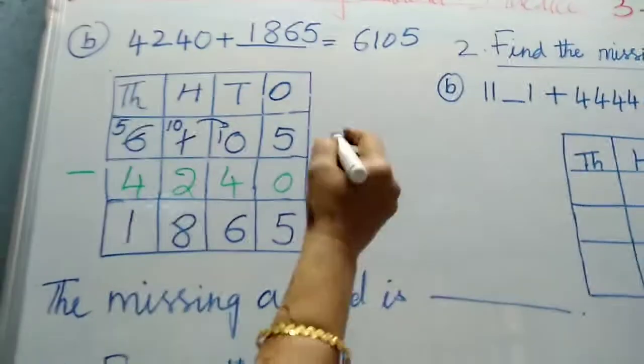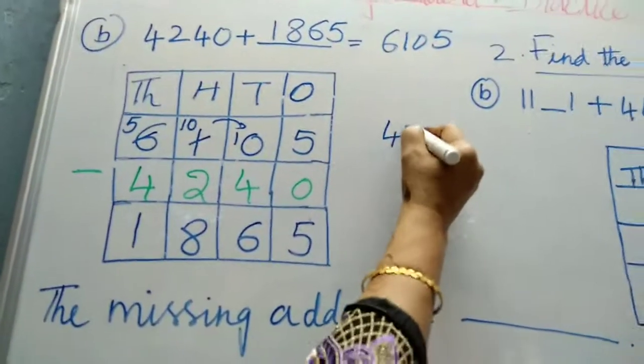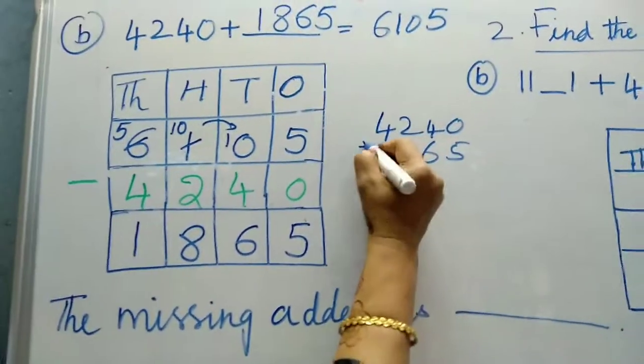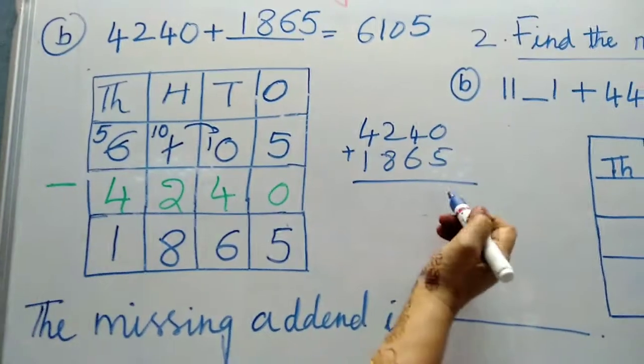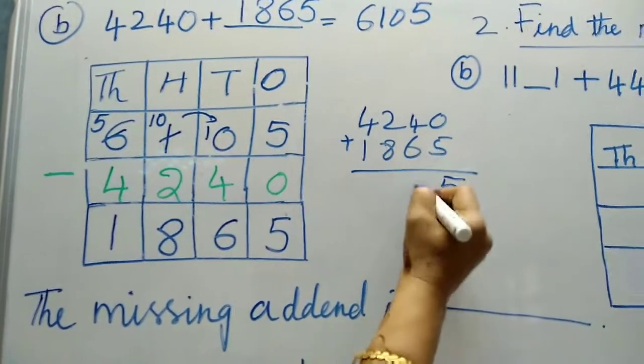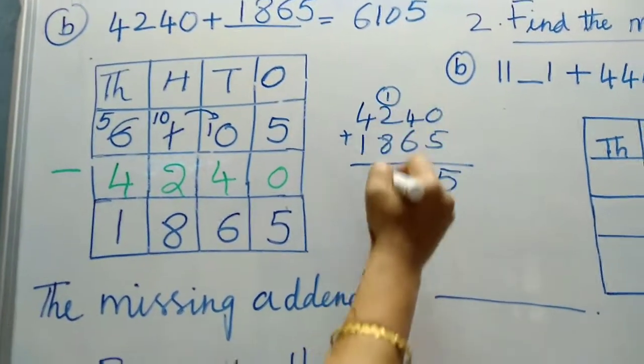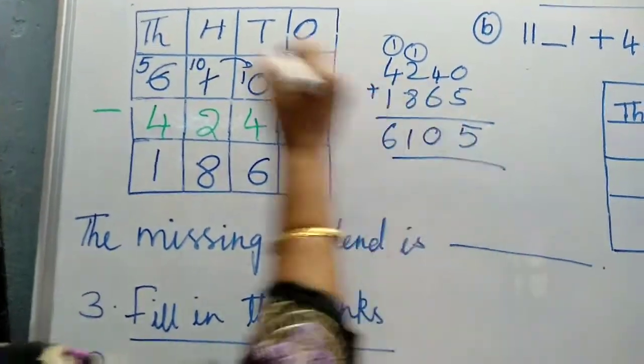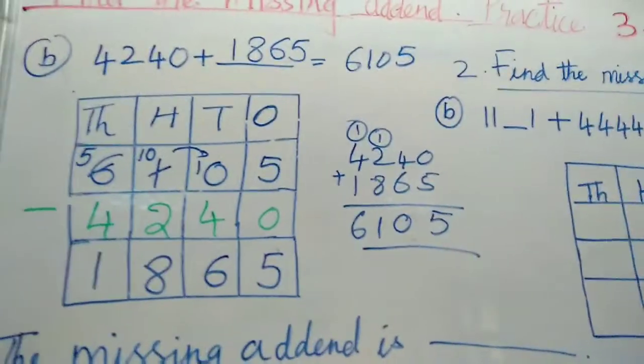Now let's see here whether it's correct. 4, 2, 4, 0 plus 1, 8, 6, 5. We will add up. Then we get the answer this or no. We will see. 5, 0, 10, 1 carry. 1, 4, 6. 6, 1, 0, 5. Yeah, we got the answer.